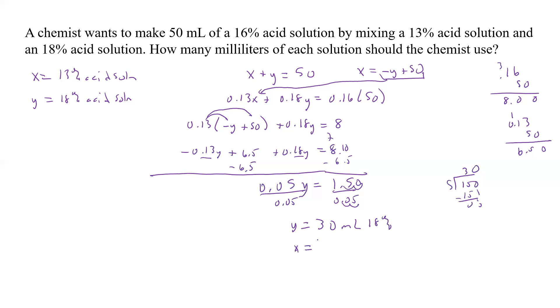X, that's going to be pretty easy. If we have 30, 50 minus 30 is going to be 20. So it's going to be 20 milliliters of the 13% acid. So that should be our answer.